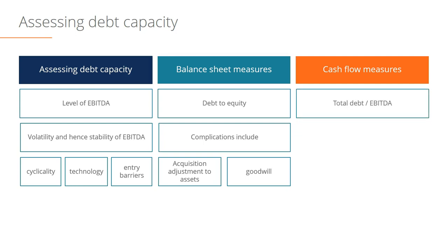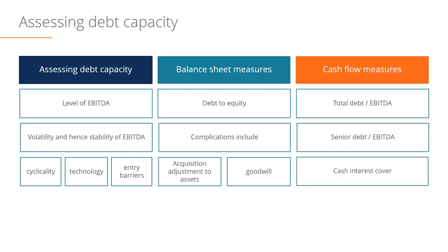In terms of cash flow metrics, debt to EBITDA is probably the most common. We can break that down further to look at the senior debt to EBITDA ratio or subordinated debt to EBITDA ratios. We can also look at cash interest coverage, which tells us how many times the cash flow generated from the business can service the interest expense on the debt. Another metric is EBITDA minus capital expenditures, and looking at how many times that covers our interest expense.